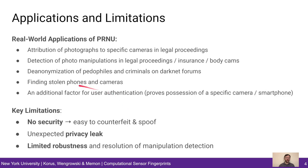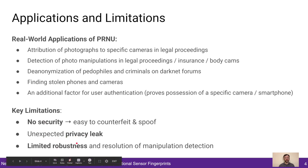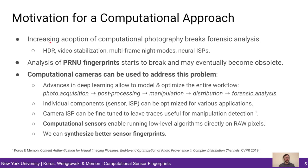Additional applications include the anonymization of pedophiles and criminals in darkened forums, finding stolen images in cameras, or as an additional factor for user authentication. Key limitations include the lack of security, unexpected privacy leaks, limited robustness, and low resolution of manipulation detection. Unfortunately, increasing adoption of computational photography starts to break forensic analysis, and analysis of PRNU fingerprints may eventually become obsolete.